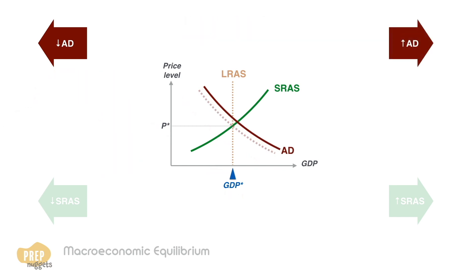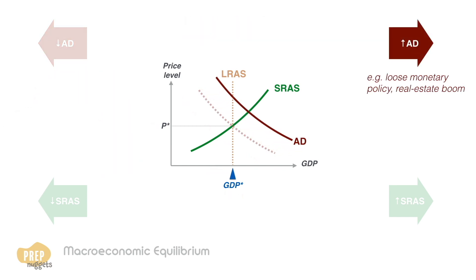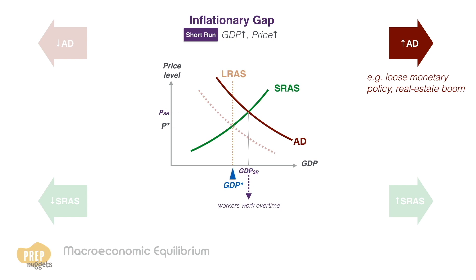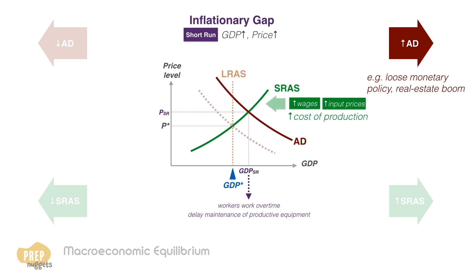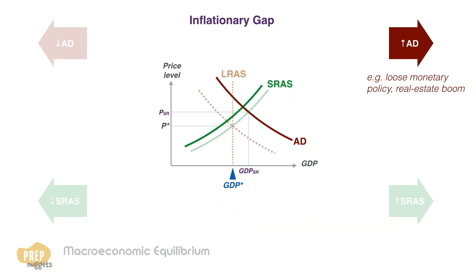A second case to consider is an increase in aggregate demand due to factors like loose monetary policy or a real estate boom. This results in higher prices and a level of GDP greater than full employment GDP in the short-run — we call this an inflationary gap. The economy can operate at this level in the short-run as workers work overtime and maintenance of productive equipment is delayed. However, this is unsustainable in the long-run, because wages and input prices increase under intense competition, thus increasing costs of production, shifting the SRAS curve to the left.